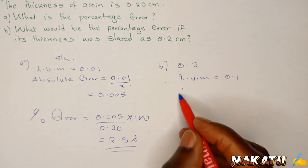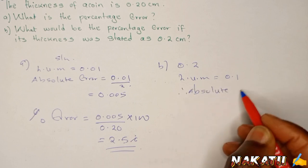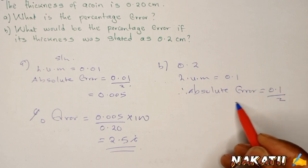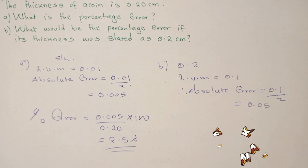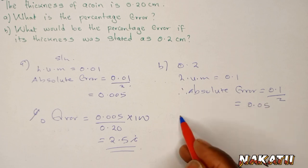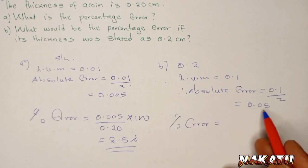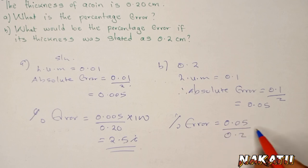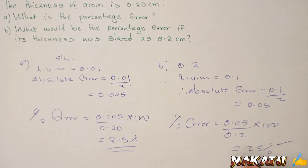Therefore, our absolute error will be 0.1 divided by 2, which equals 0.05. So our percentage error will be 0.05 divided by the actual measurement, which is 0.2, times 100. We get it is 25%, and that is the difference.